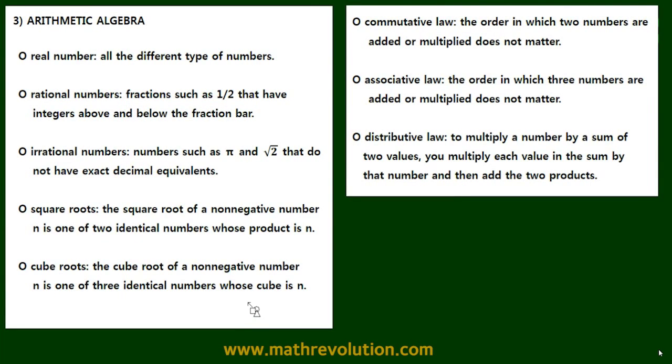Now let's look at arithmetic algebra. A real number is all the different types of numbers that you can think of. This includes negative numbers as well as zero, and of course all the positive numbers.